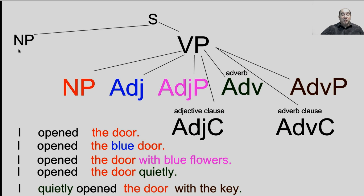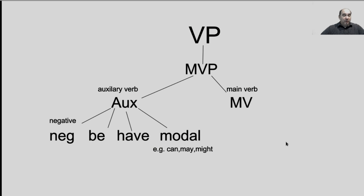Bear in mind, I still have a noun phrase on the other side — "I." And I have something called a main verb phrase, because this is going to describe my main verb. So a verb phrase is going to contain the verb and all the parts that go after it — a lot of different things can go into a verb phrase.